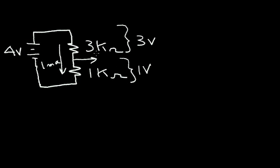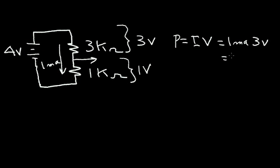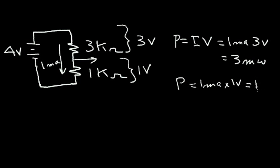If I want to calculate the power in these two resistors, power is equal to current times voltage. For the 3kΩ resistor, that is one milliamp times three volts, which equals three milliwatts. A milliwatt is a thousandth of a watt. The power dropped across the 1kΩ resistor is one milliamp times one volt, which equals one milliwatt.